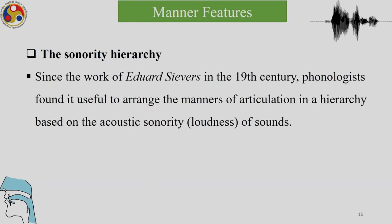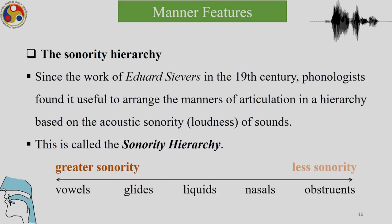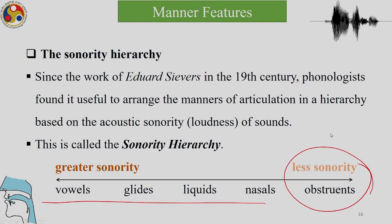Another name for minus-sonorant sounds is obstruent. Since the work of Edward Sievers in the 19th century, phonologists found it useful to arrange manners of articulation in a hierarchy based on acoustic sonority. Sonorants are essentially loud sounds. This is called the sonority hierarchy: vowels, glides, liquids, and nasals are of greater sonority, while obstruents are least sonorous. As a result, vowels, glides, liquids, and nasals are plus-sonorant, and obstruents are minus-sonorant.